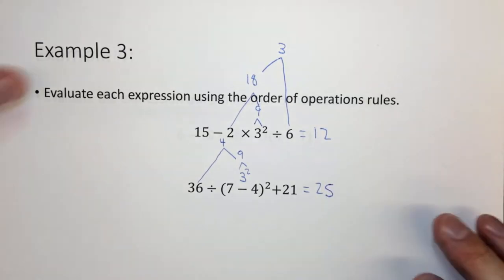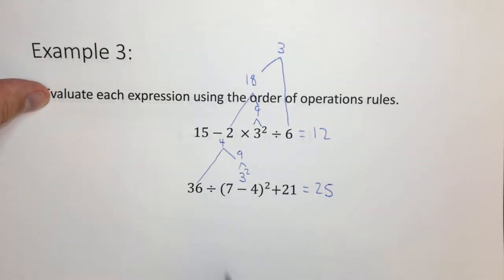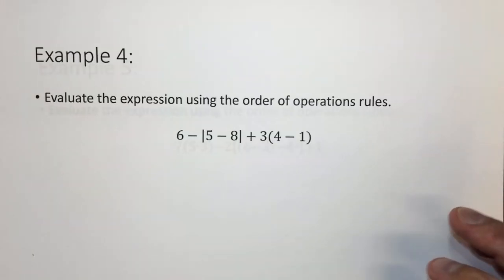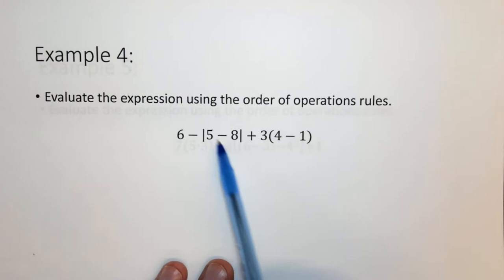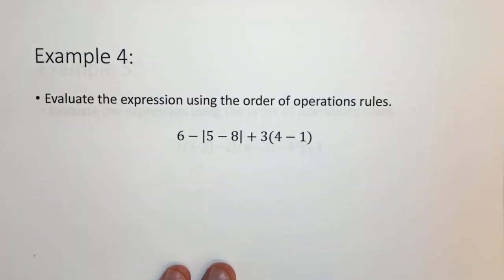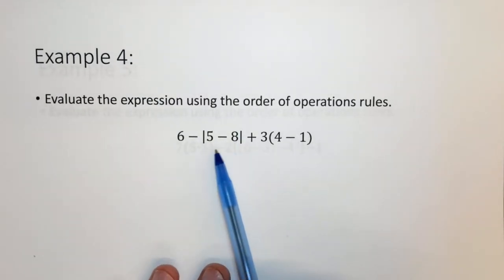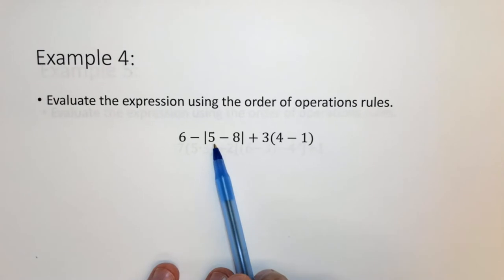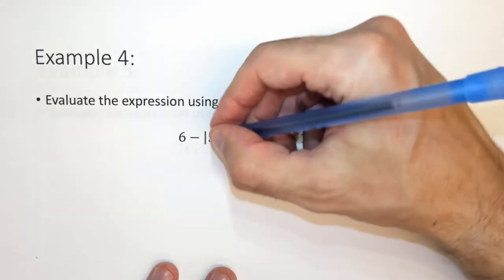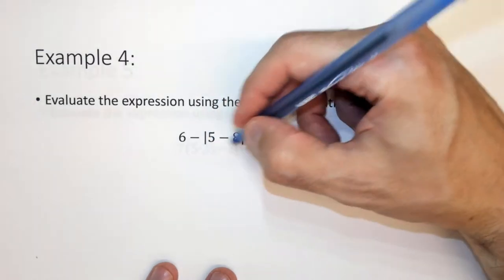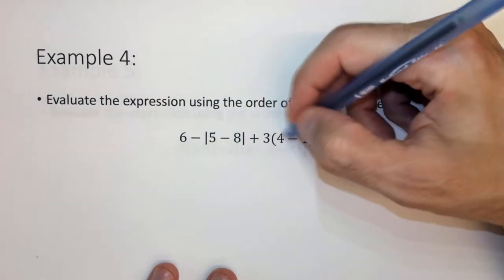So order of operations is very important to know the order to do this. If you do it in the wrong order, you'll likely get the wrong answer. Here we have an absolute value. Absolute value means the magnitude, not the direction. Said another way, if it's a negative number, make it positive. If it's positive, just leave it.